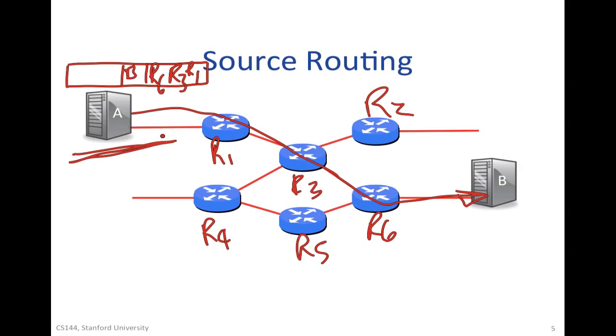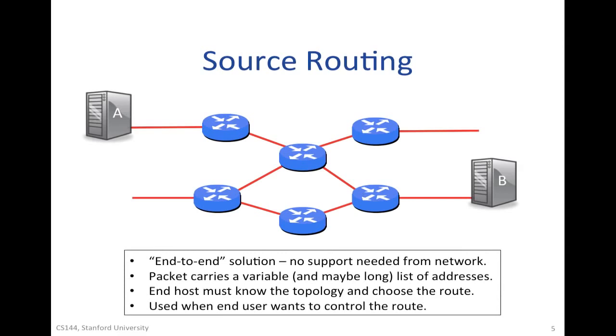And this way we can make sure it's done correctly. But it's a lot of work for the end host, and packets are of variable length and might carry a lot of addresses. So on the face of it, it's kind of a good scheme, but clearly we would like to do something that was a little less heavyweight on the end host. So it's an end-to-end solution, no support needed from the network. Packet carries a variable and maybe long list of addresses. End hosts must know the topology and choose the route. And this is used when the end host wants to control the route.